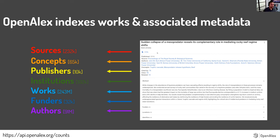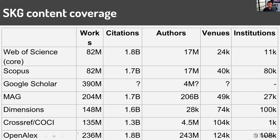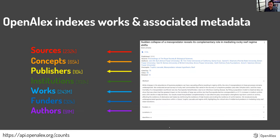OpenAlex currently has 10,000 publishers, 102,000 institutions, 243 million works, 32,000 funders, and 91 million authors. Just this summer we released a new author disambiguation algorithm that significantly improved that figure, reducing it from 243 million down to 91 million authors by merging profiles that should have been combined. Also, at the bottom of the screen you'll see an API call you can copy and paste into your web browser to get these updated numbers anytime you want — you don't need to email us to find out what's currently indexed.